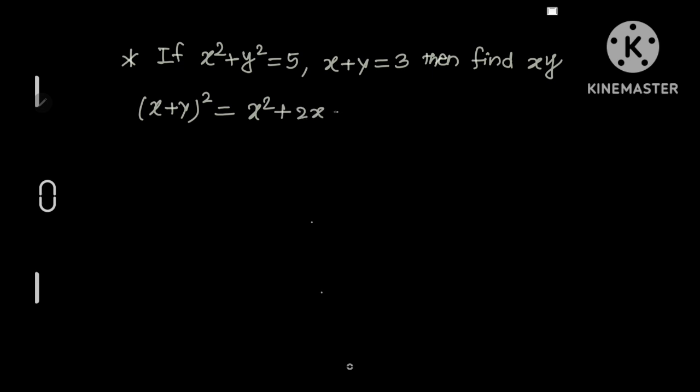Now, as x² + y² = 5 is given, we can write this x² + y² as 5. And x + y value is given as 3, so 3² = 5 + 2xy.